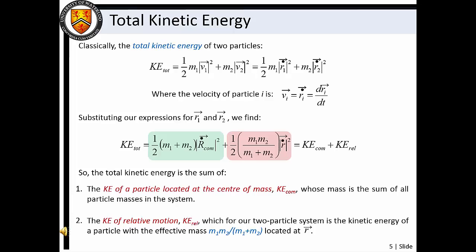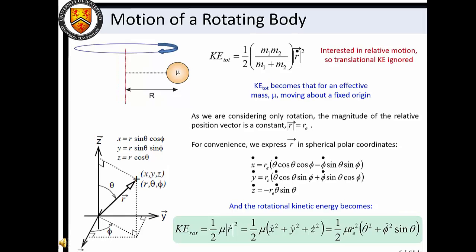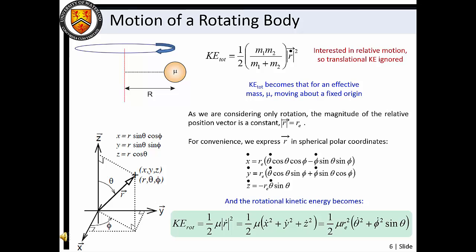Note that because we are developing our theory for a diatomic molecule, the mass weighting of the relative positions is the reduced mass for our two particles. By representing the kinetic energy of rotation in terms of a reduced mass for our diatomic molecule, we are describing the rotating system in terms of a single effective mass that is orbiting at a distance r from the molecular center of mass. If we assume a rigid system, the magnitude of the relative position vector is a constant. For convenience, we can express the relative position vector in spherical polar coordinates, explicitly treating the angular dependence of our rotating molecule.